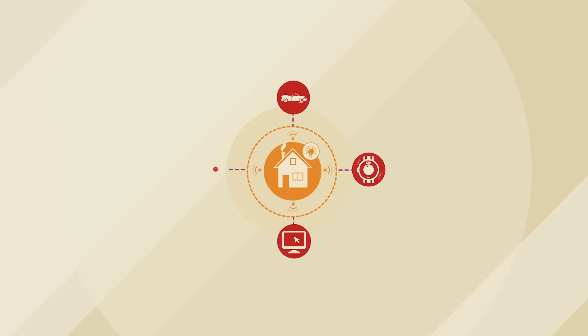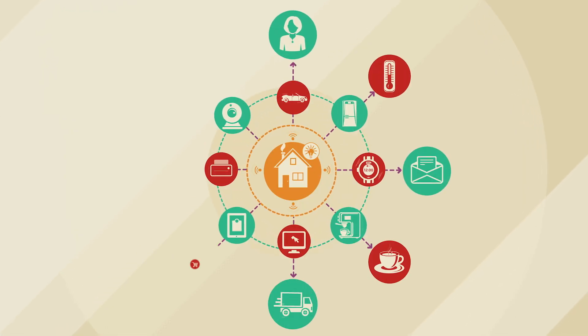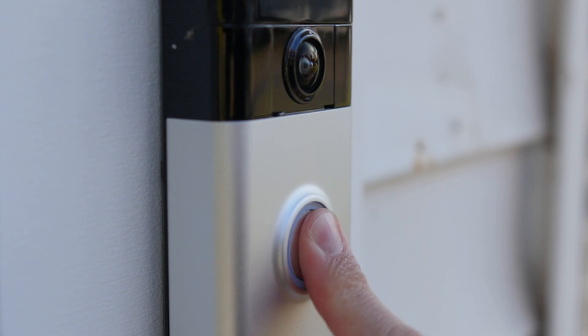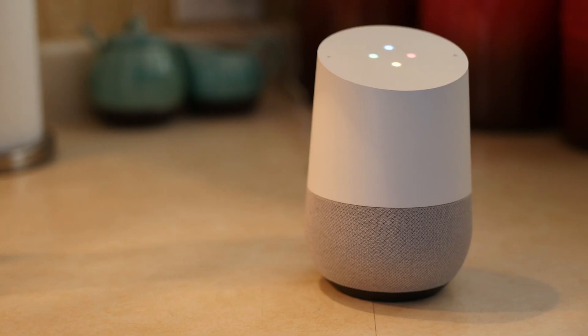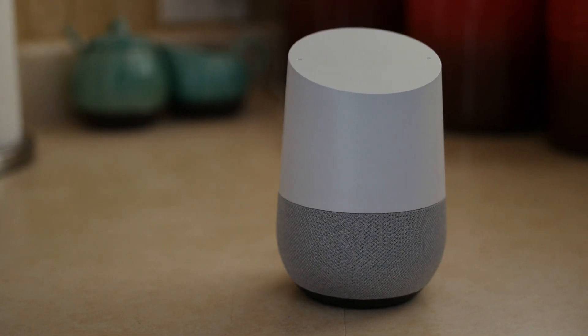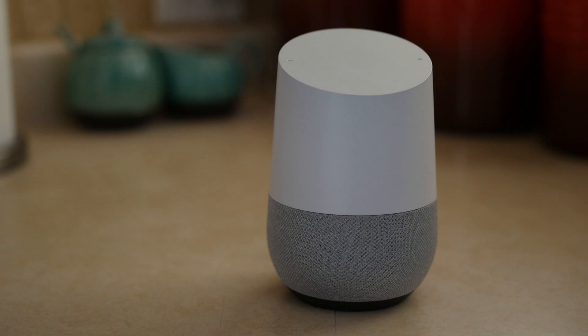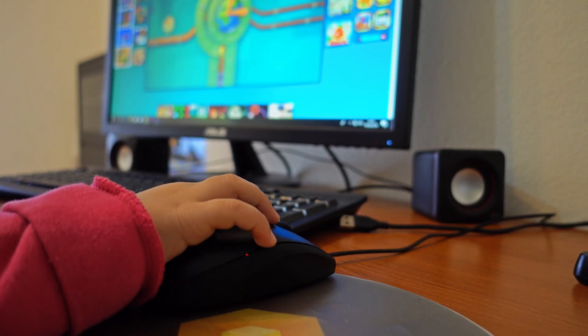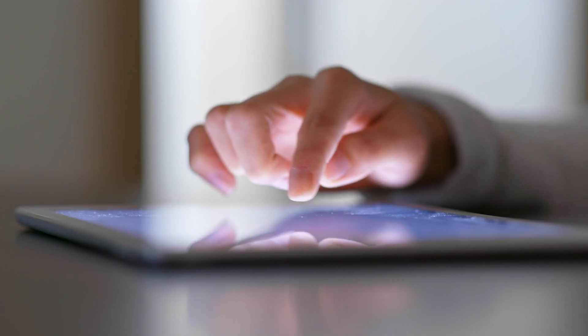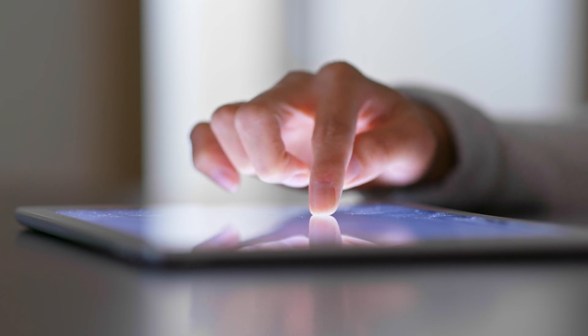The Internet of Things, or IoT, is anything that's connected to the Internet. So usually when people think about IoT, they think about small devices like a Nest doorbell, a Google Home, and how that interacts with their smart home. But the Internet of Things can be anything that's touching the Internet — so your desktop computer, your laptop, or an iPad. These are all Internet of Things devices.